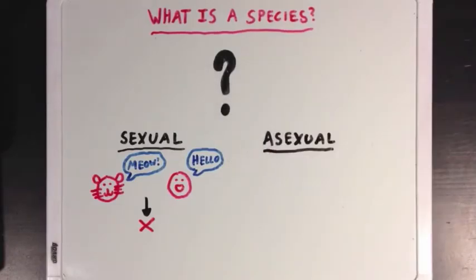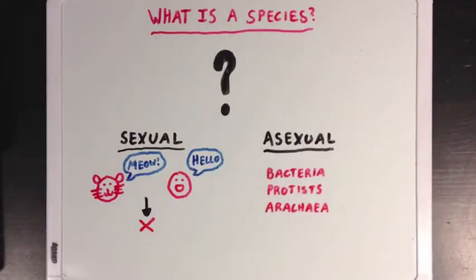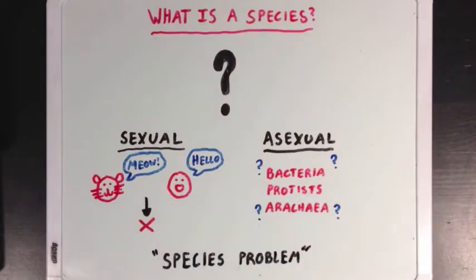However, for asexually reproducing organisms, like bacteria, protists, and archaea, it's a little more confusing. These species don't mate with other organisms, so we have a difficult time classifying them into different categories. And we call this the species problem.